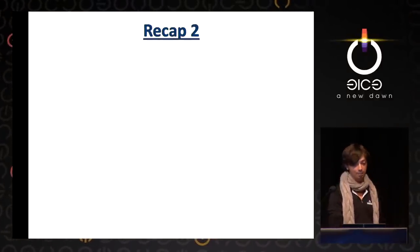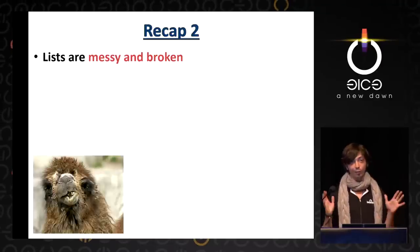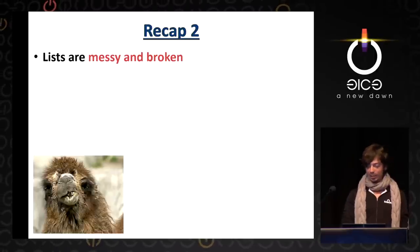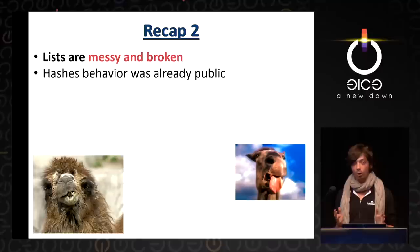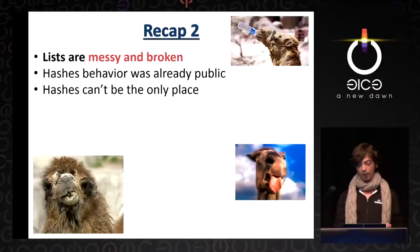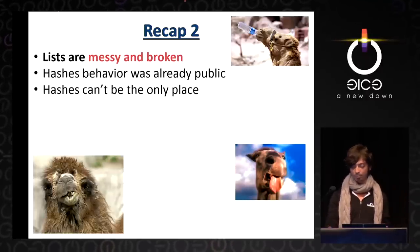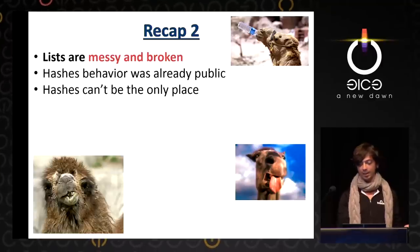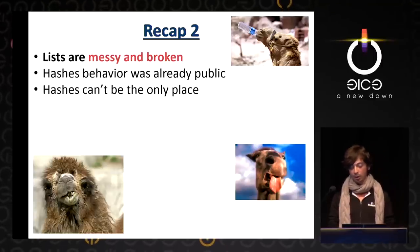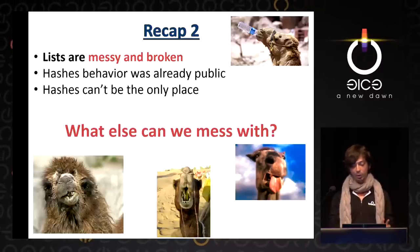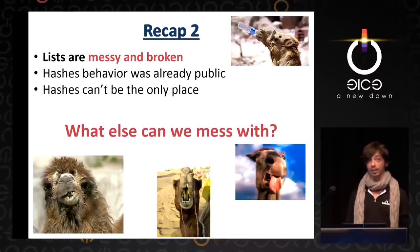Let's recap again. Lists are messed up — but those list quirks shown thus far were already public. Hashes can't be the only place vulnerable. So let's leave hashes aside and take list expansion behavior to the next level, to find some bizarre, undisclosed vulnerabilities and behaviors.